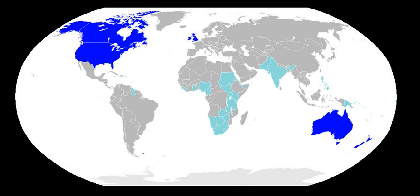English is an Indo-European language and belongs to the West Germanic group of the Germanic languages. Old English originated from a Germanic tribal and linguistic continuum along the coast of the North Sea, whose languages are now known as the Anglo-Frisian subgroup within West Germanic. As such, the modern Frisian languages are the closest living relatives of modern English. Low German and Low Saxon are also closely related, and sometimes English, the Frisian languages, and Low German are grouped together as the Ingvaeonic languages, though this grouping remains debated.